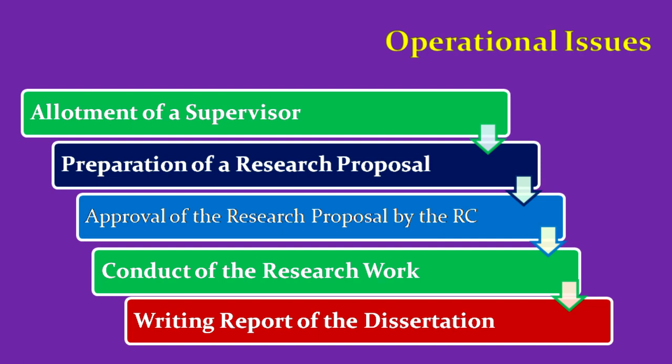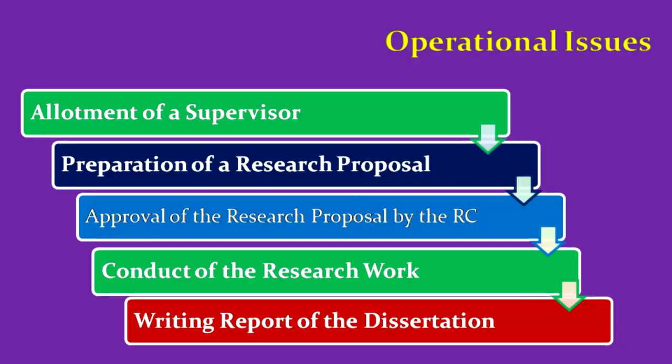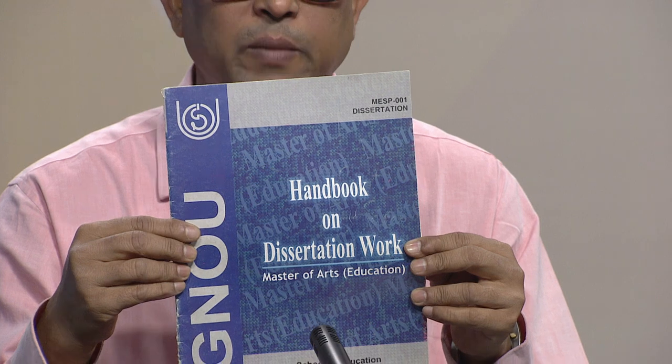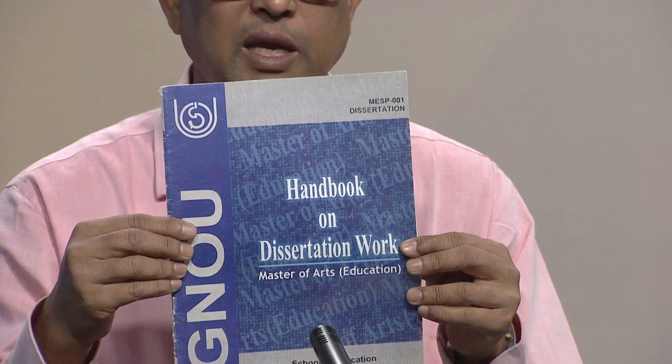After getting approval, conduct the research work: go to the field, implement the research proposal, collect data, and analyze the data. After conducting the study, write the dissertation report. How to write the dissertation — including how to write the preliminary section and the main body — is explained in the Handbook on Dissertation Work. Go through it carefully.